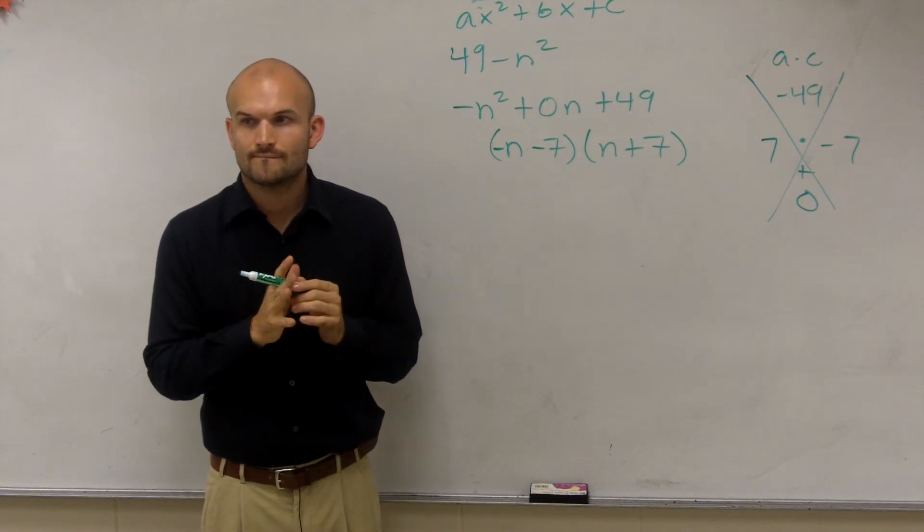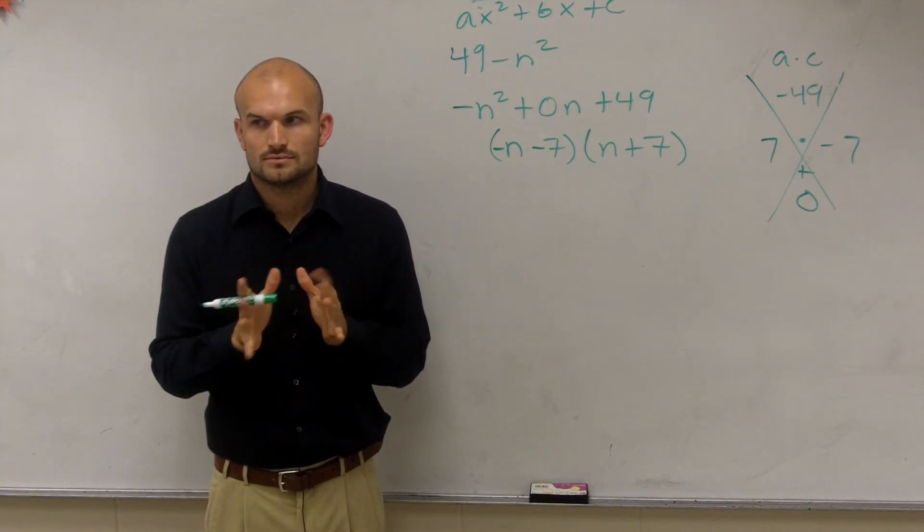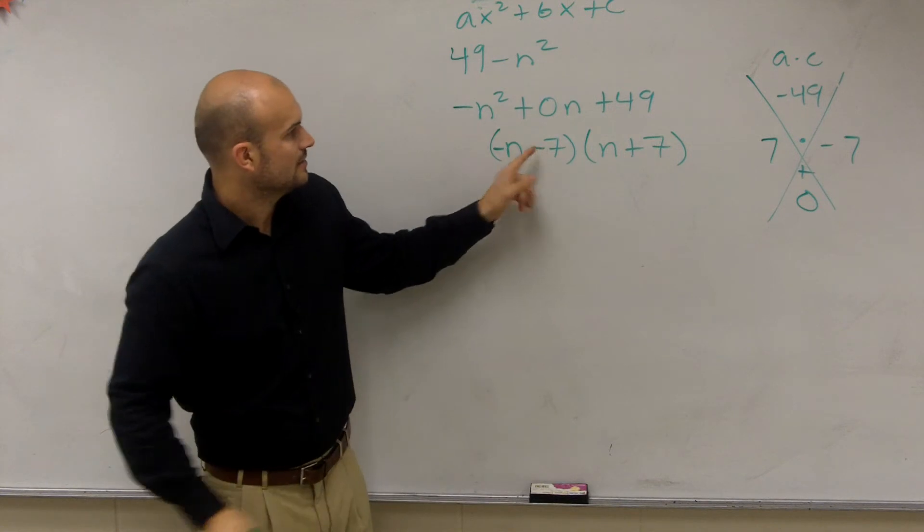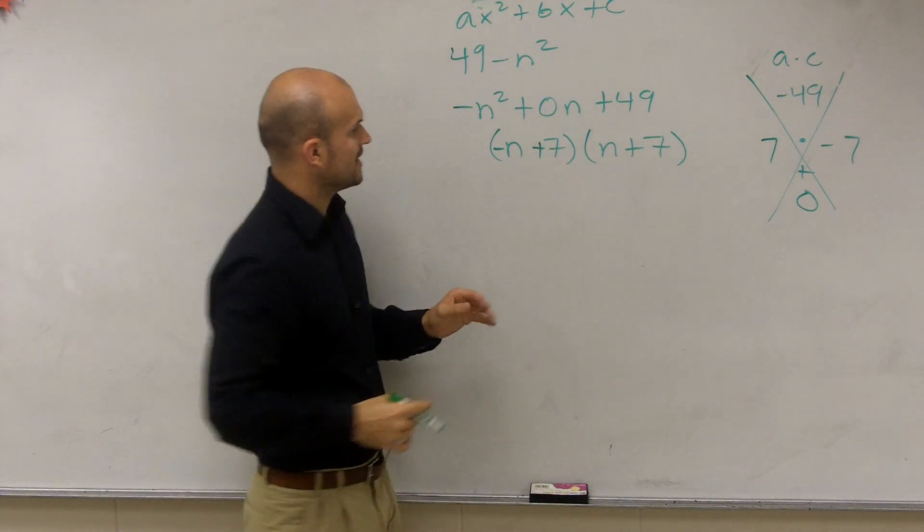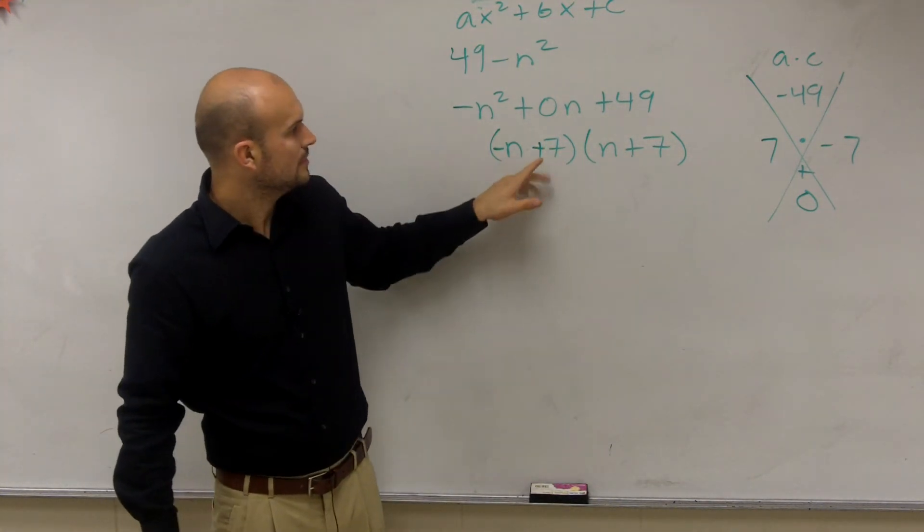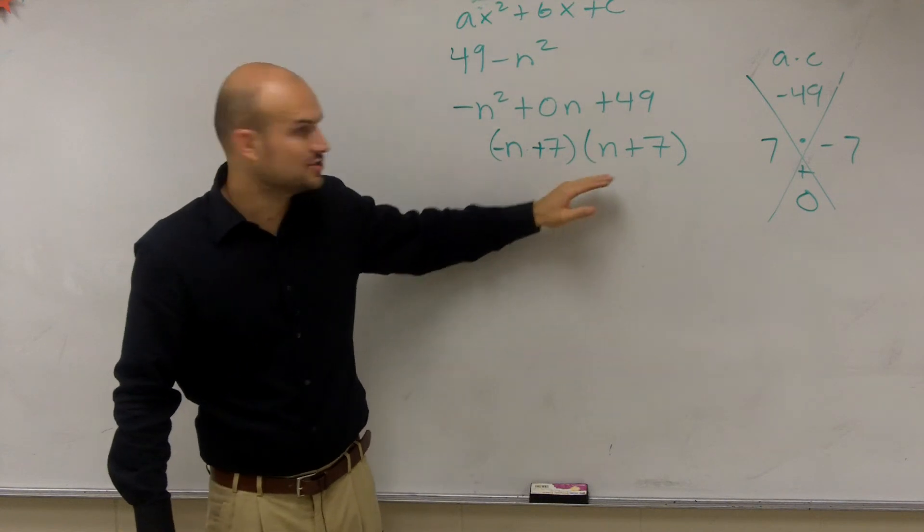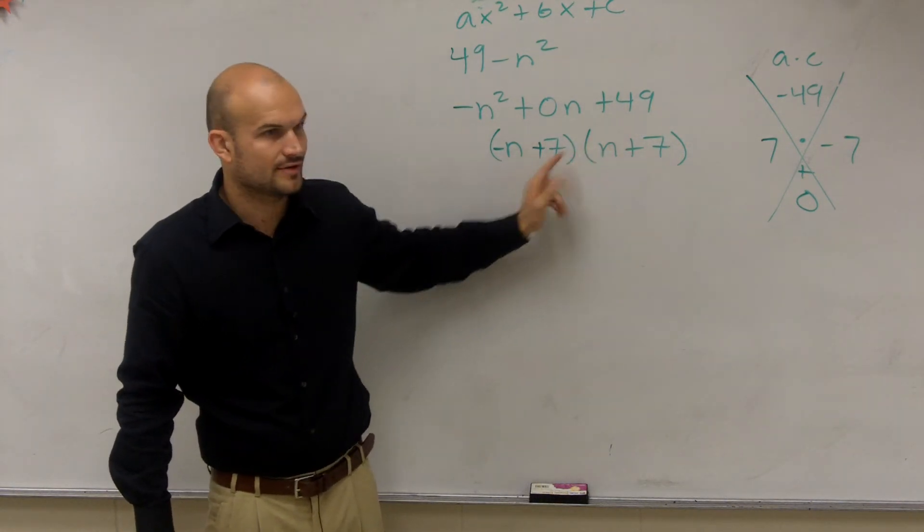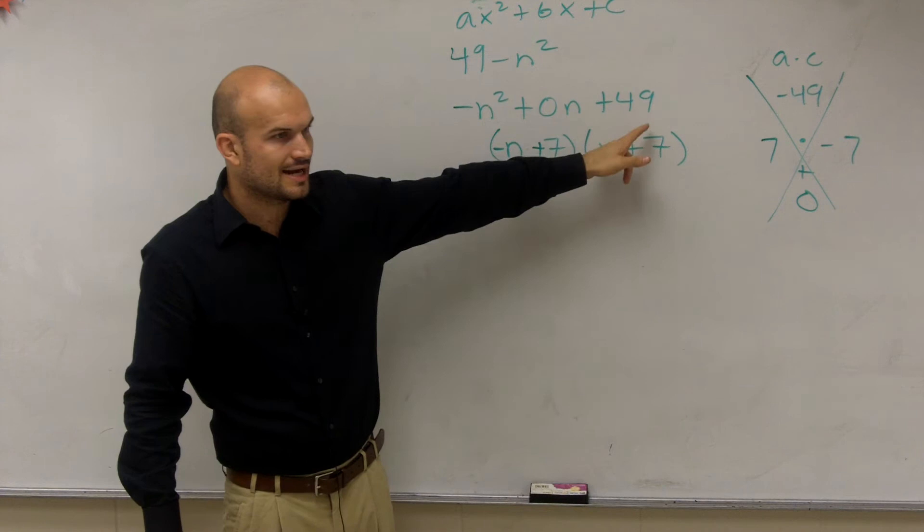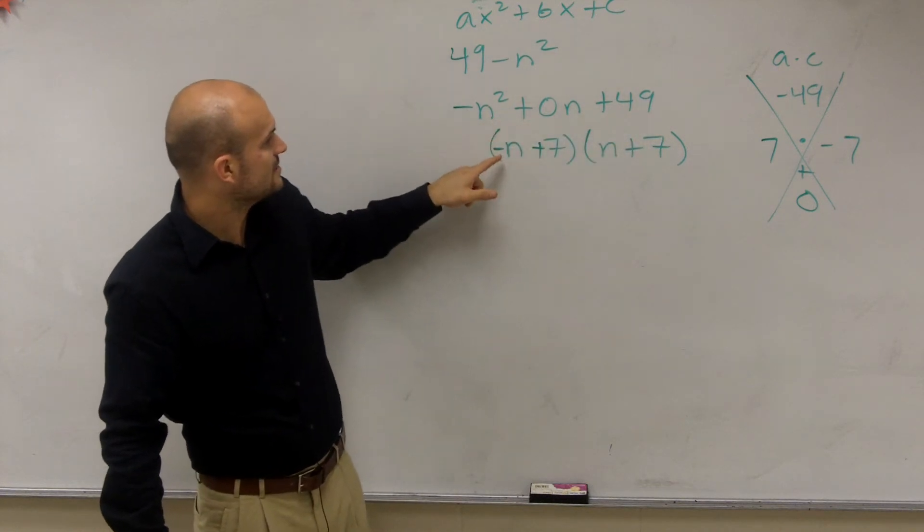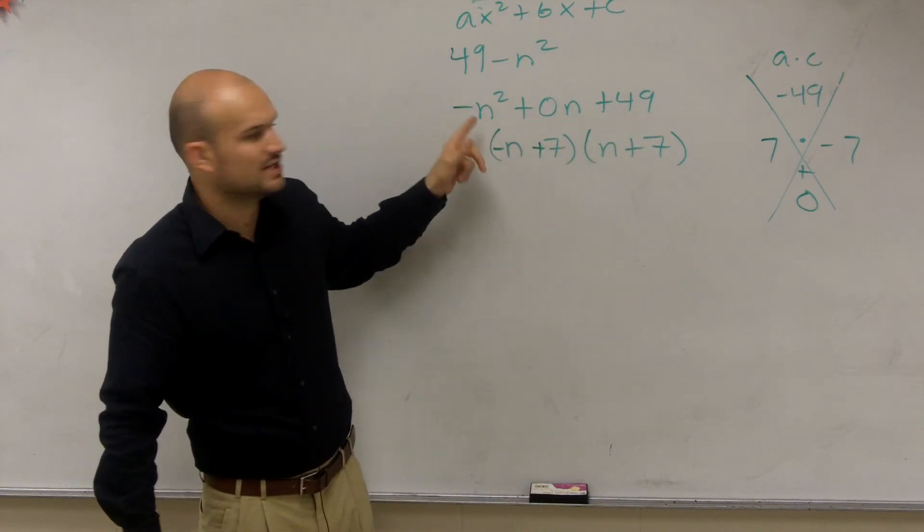There you go. Okay. Cool? Just think about it. I'm sorry, that has to be plus when I factor it out. 7? Just think about it. Do these two terms multiply to give you, does 7 times 7 give you 49? Yes.